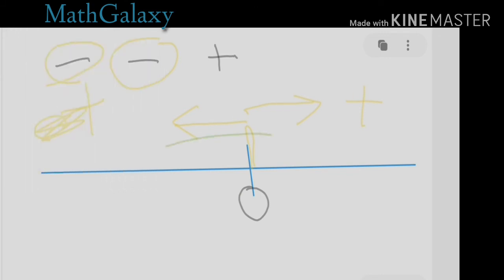So this is the number line trick and the real secret. At first I face left — that side becomes positive. The second minus reverses me, so I go right, which is also positive. That is why minus times minus equals plus. This is the ultimate secret behind why negative times negative gives a positive result.